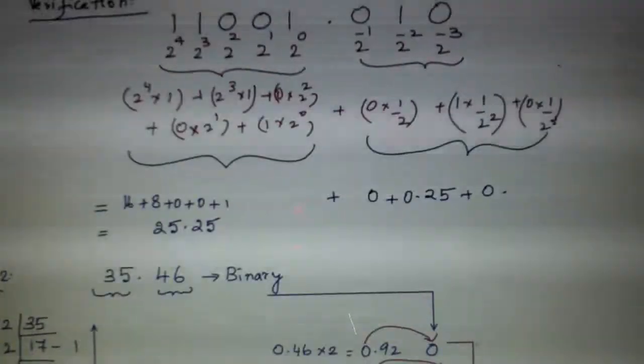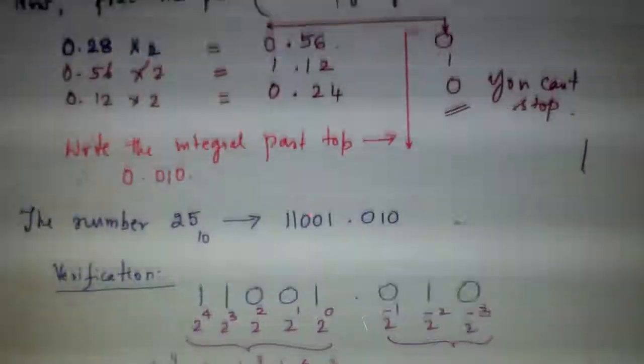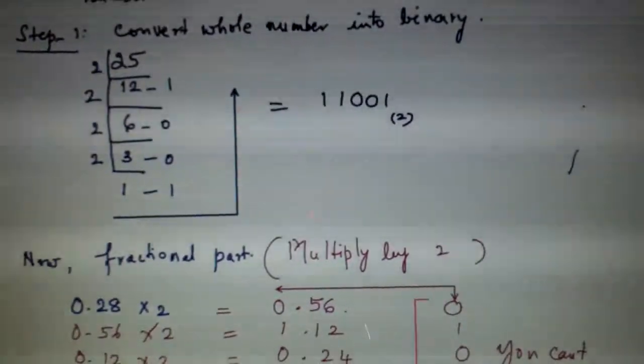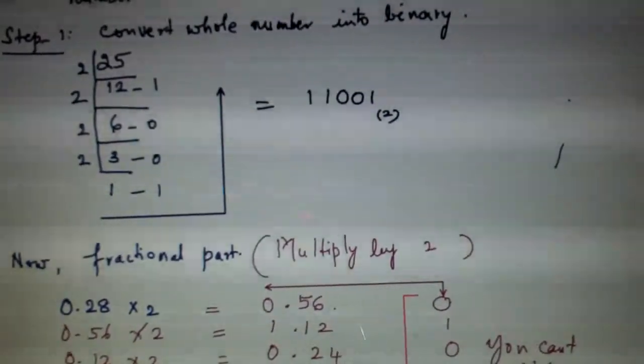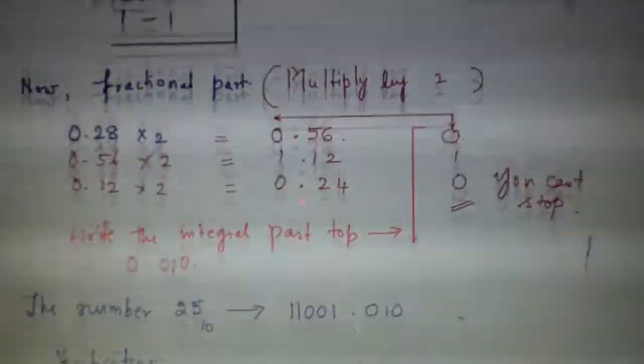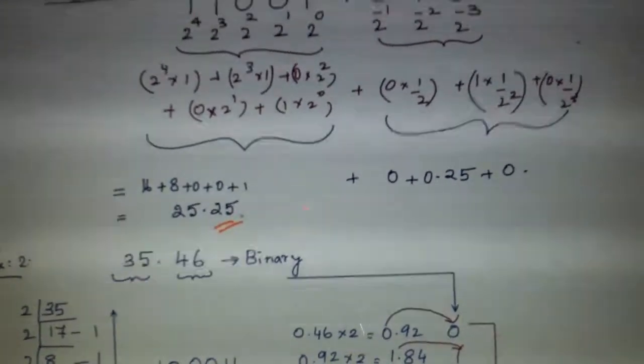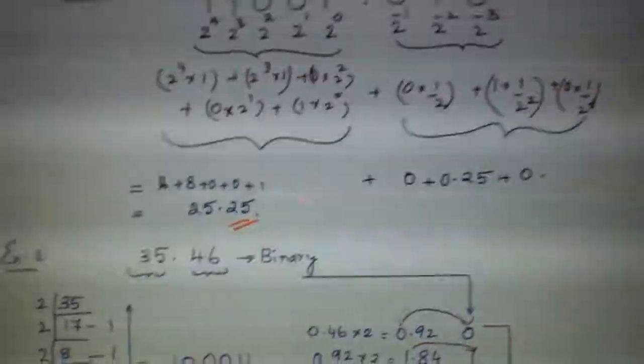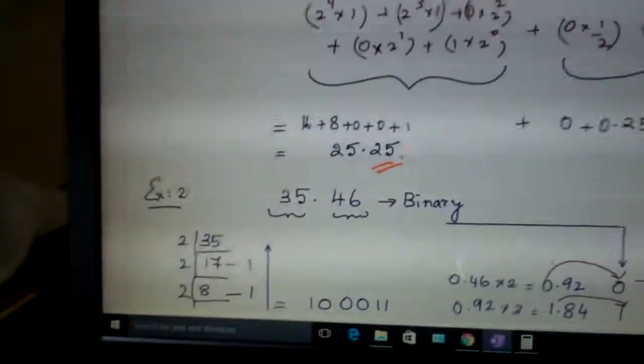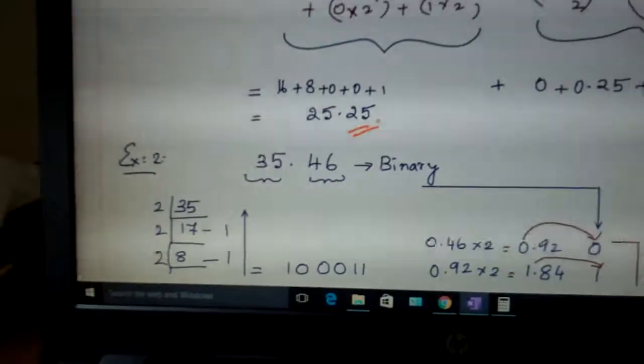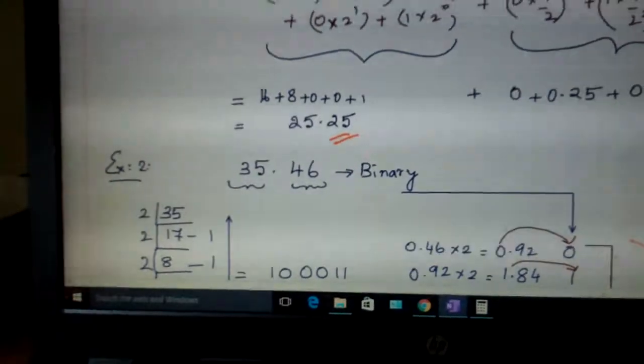So actually the number given to you was 25.28. You got only up to 0.25 here. So if you take one more digit, maybe you will get one more value.